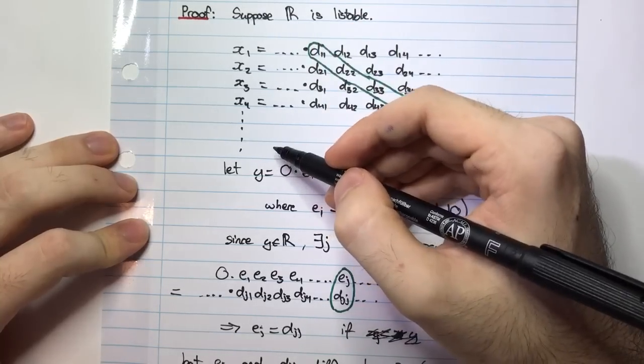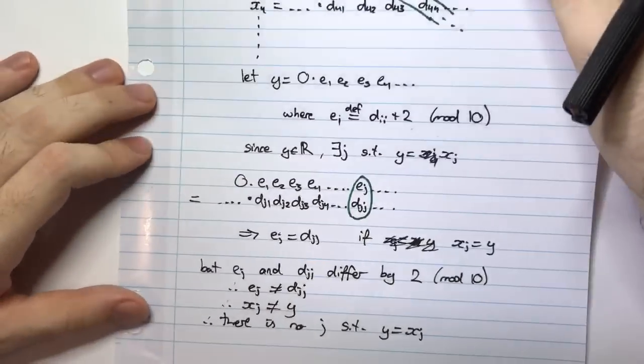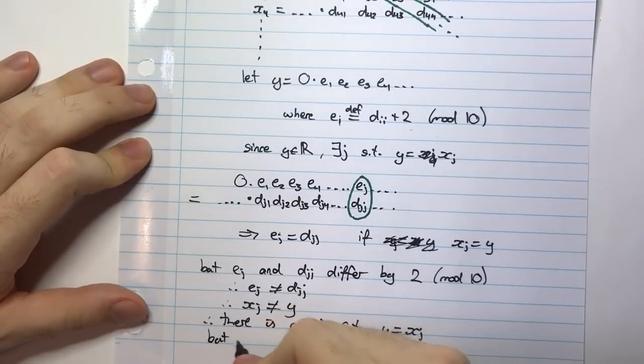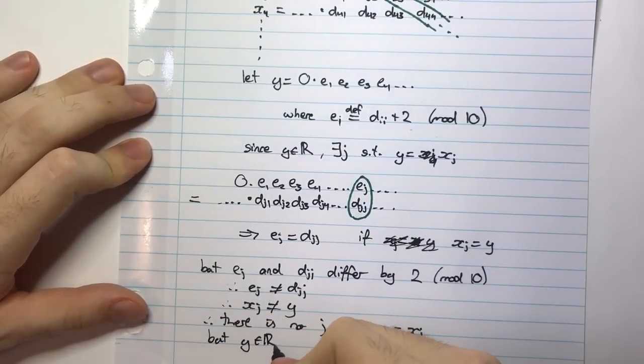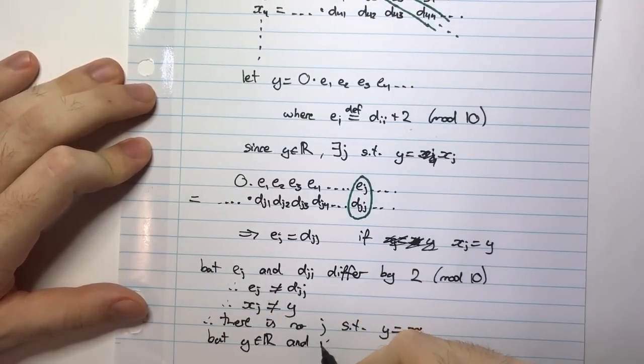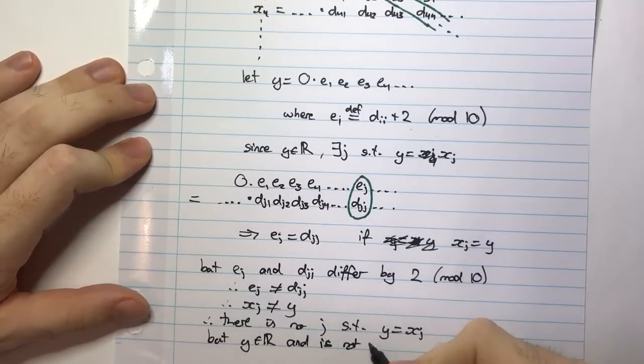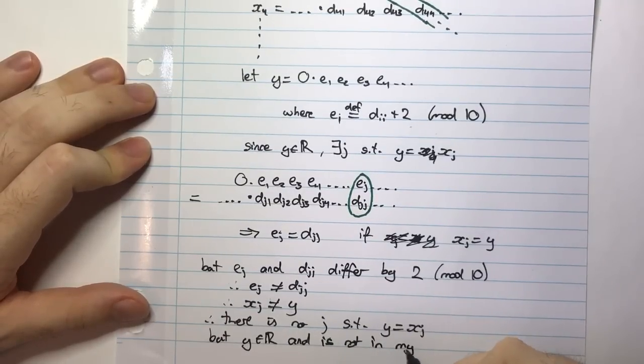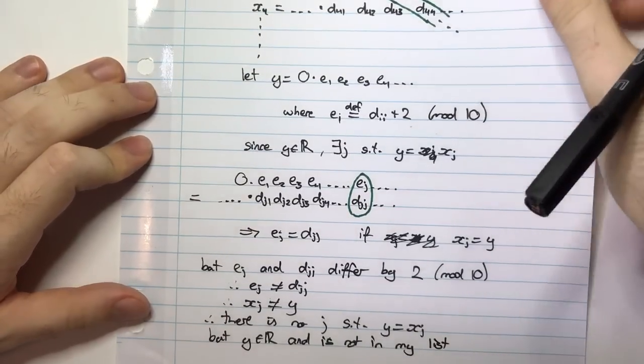But Y is real and is not in my list. So therefore I can say, if Y is not in my list, and it's a real number, it's not in my list, therefore R can't be listable.